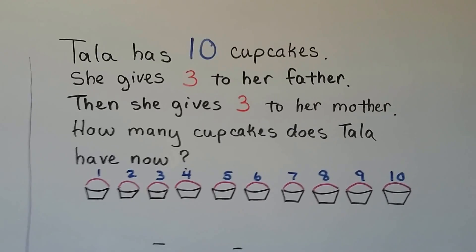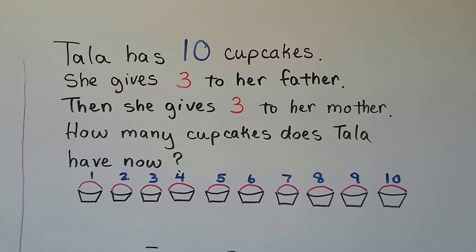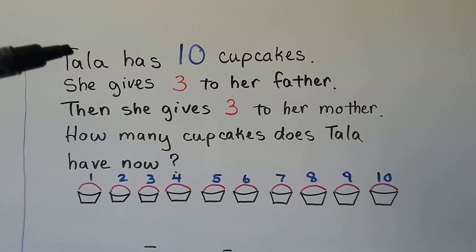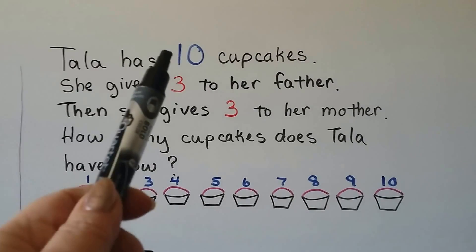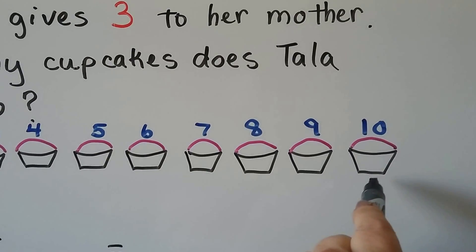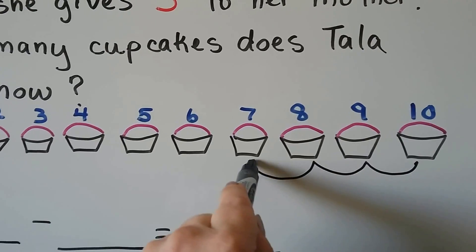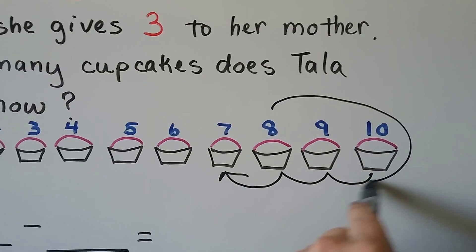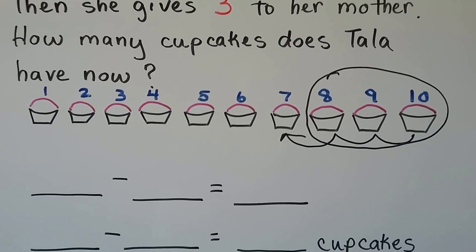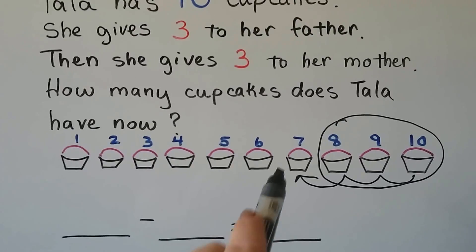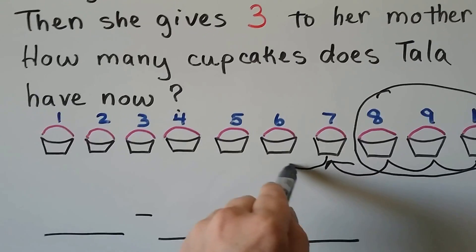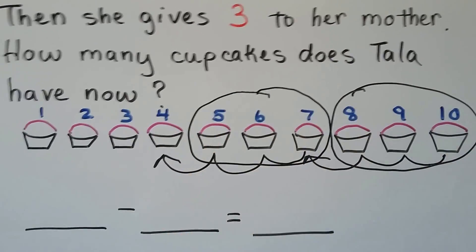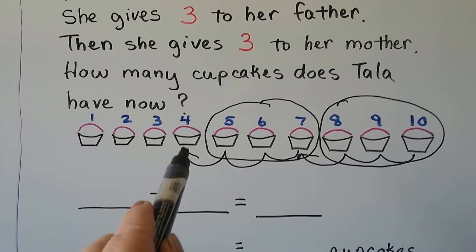Tala has 10 cupcakes. She gives 3 to her father, then she gives 3 to her mother. How many cupcakes does Tala have now? We have 10 cupcakes — that's how many she had. Then Tala gave 3 to her father, so we start at 10 and count back 3: 1, 2, 3. Then she gave 3 to her mother — now we're at 7 and we count back 3 more: 1, 2, 3. We landed on 4.